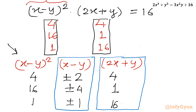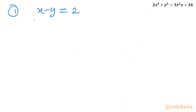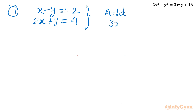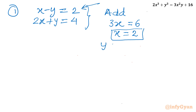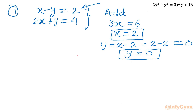First system: x − y = 2 and 2x + y = 4. Adding both equations: 3x = 6, so x = 2. From the first equation, y = x − 2 = 2 − 2 = 0. So the first ordered pair for our integer solutions is (2, 0).